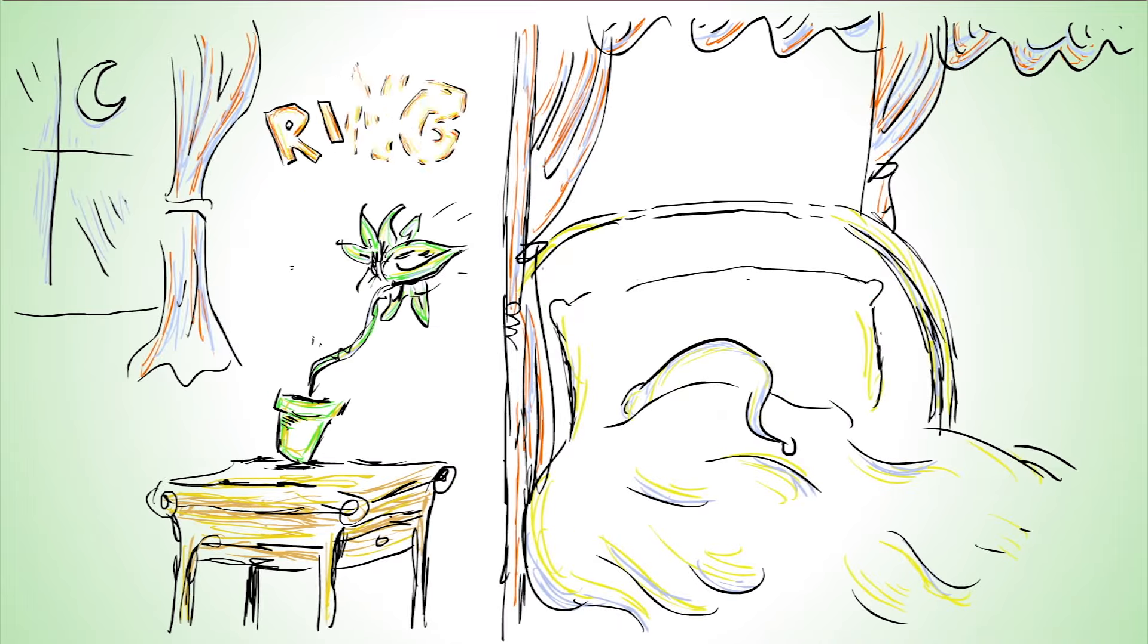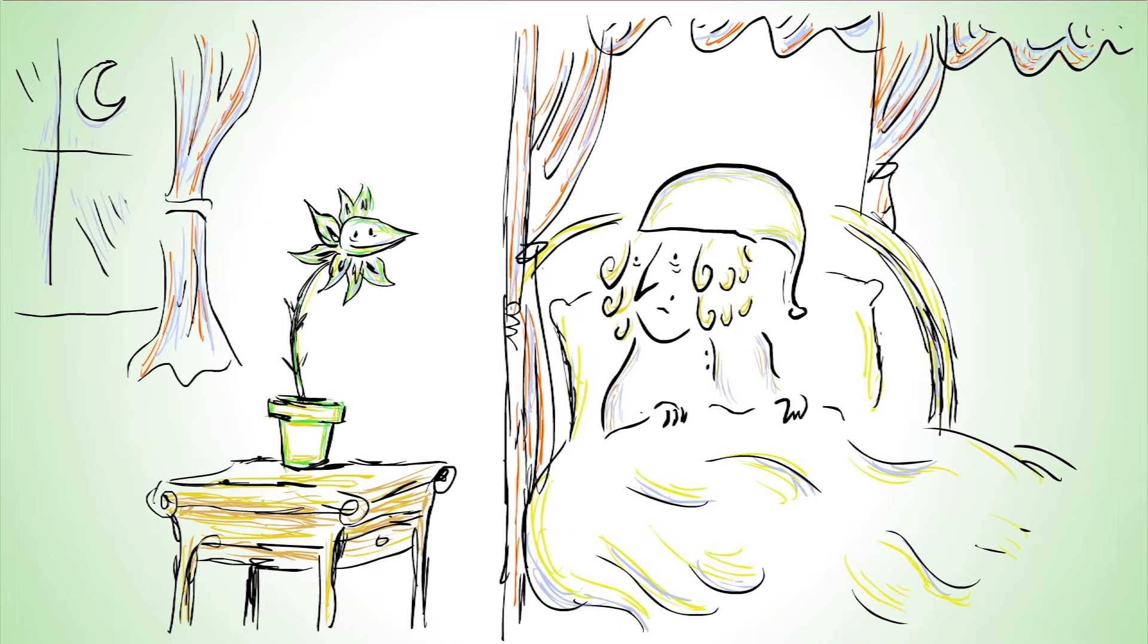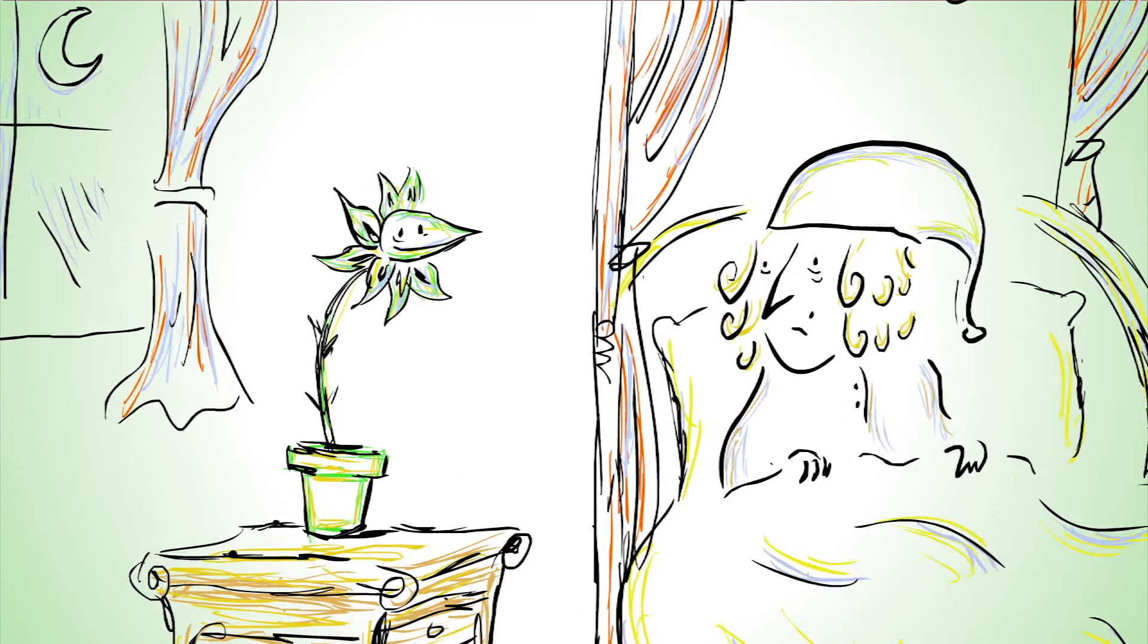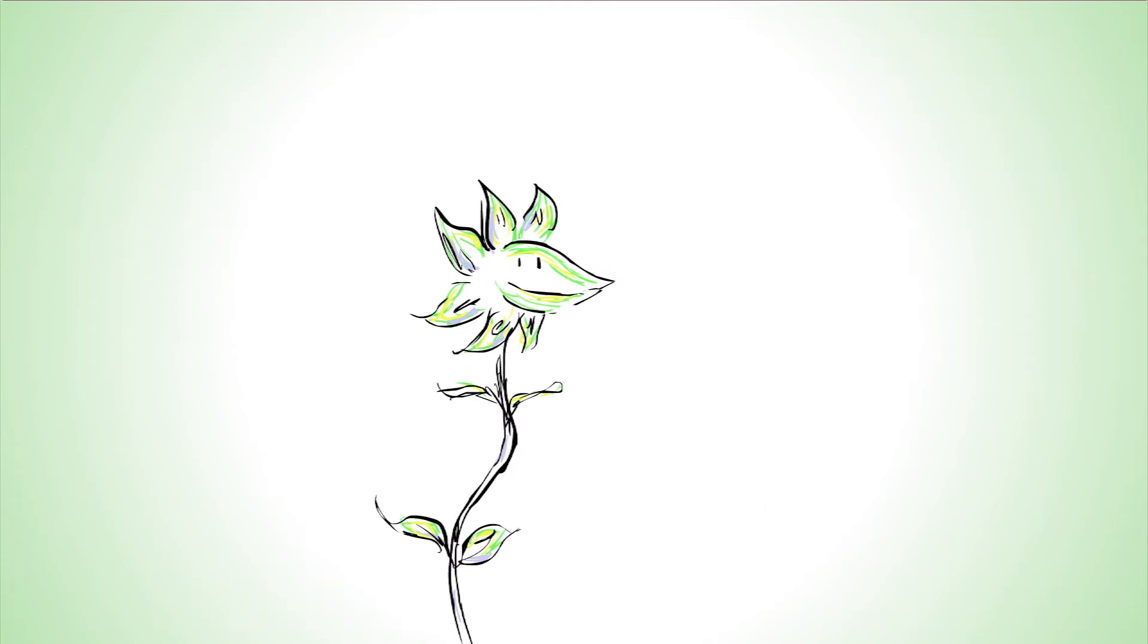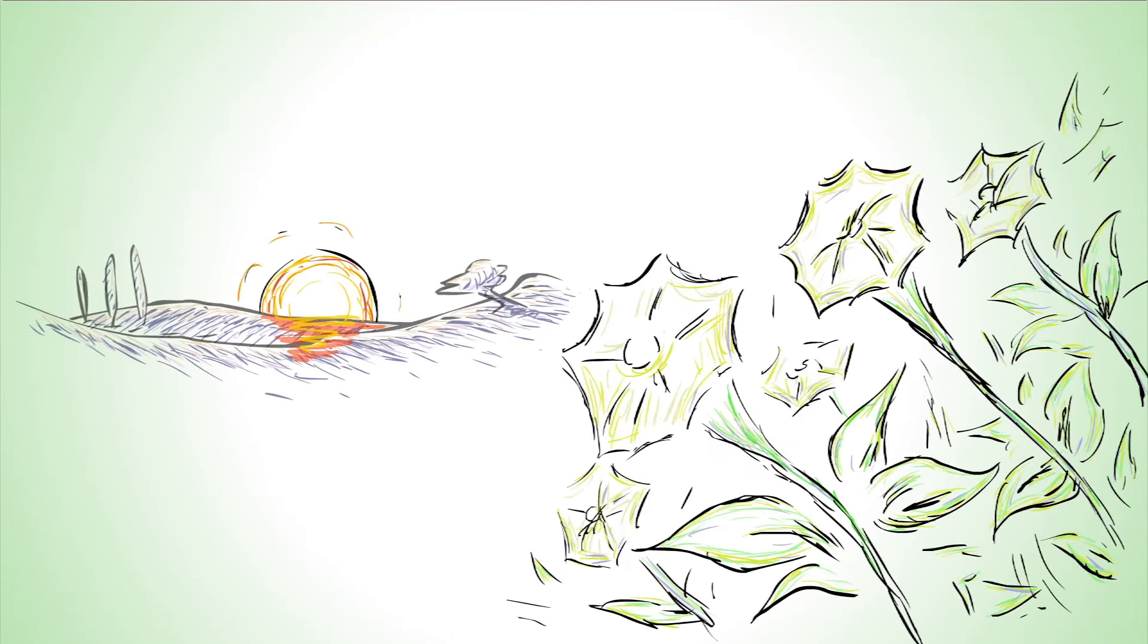Linnaeus' plan wasn't perfect, but the idea behind it was correct. Flowers can indeed sense time, after a fashion. Morning glories unfurl their petals like clockwork in the early morning. A closing white water lily signals that it's late afternoon.